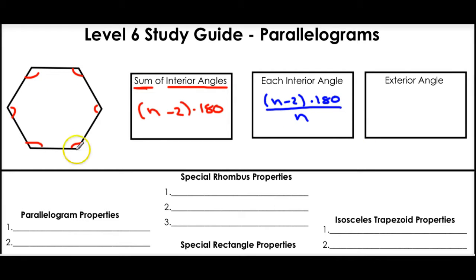For example, if I knew the sum of this to find each or just one interior angle, I would just divide it by how many angles there are. And that would tell me one. That's each one. So in this case, I would divide by 1, 2, 3, 4, 5, 6.